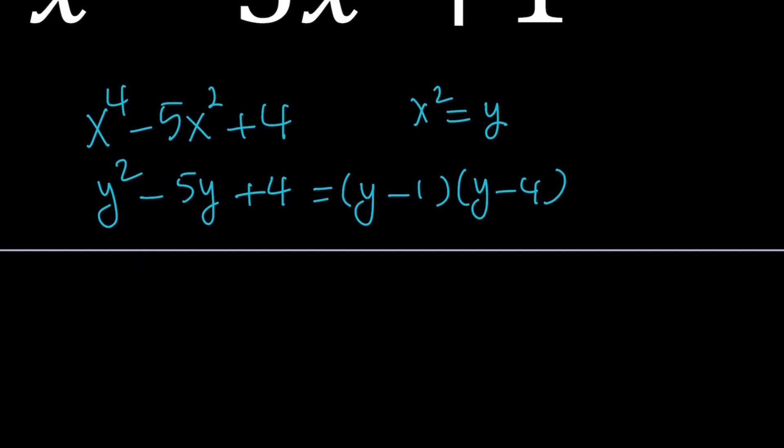And then back substitute, you're going to get x squared minus 1 times x squared minus 4. And that'll turn into, because of difference of two squares, x plus 1 times x minus 1 and x plus 2 times x minus 2. So this quartic will have four linear factors.